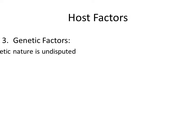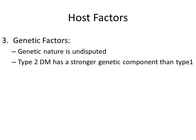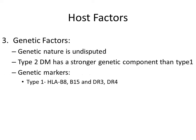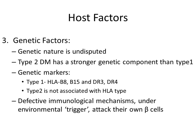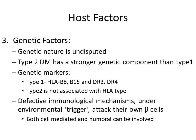Genetic factors: the genetic nature of diabetes is undisputed. Type 2 diabetes has a stronger genetic component than type 1. Some genetic markers have been associated with type 1 diabetes mellitus, while type 2 is not associated with any HLA type. Through defective immunological mechanisms, under some environmental trigger, the immune system attacks its own beta cells and destroys them in type 1 diabetes mellitus. Both cell-mediated and humoral immunity can be involved in the destruction of beta cells.